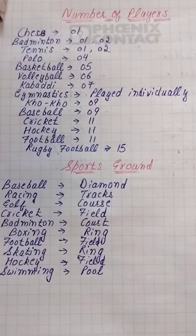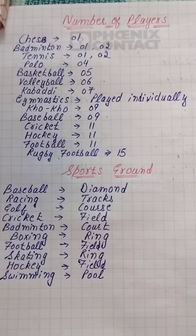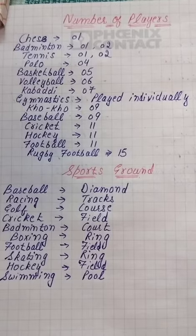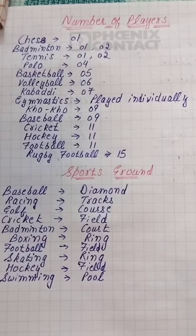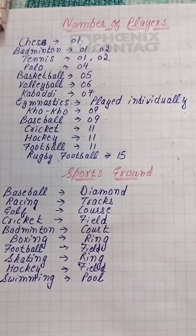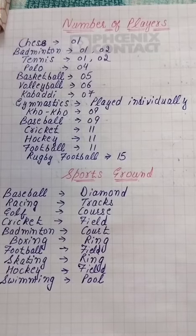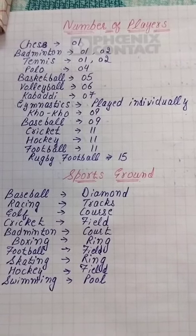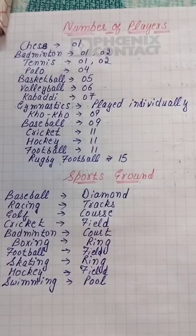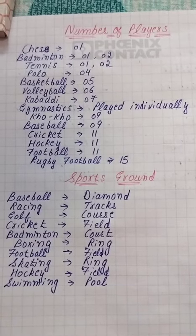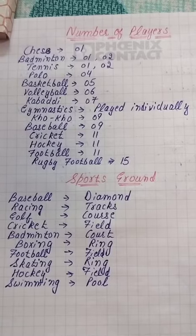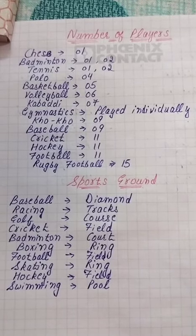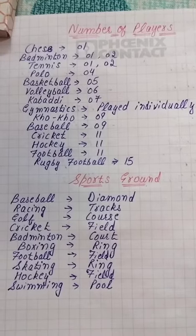Volleyball has six players. Kabaddi has seven players. Gymnastics and swimming are played individually — each player plays alone. Kho-kho has nine players. Baseball also has nine players. Cricket, hockey, and football — you must remember — all three have eleven players. Rugby football has fifteen players.